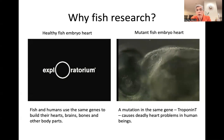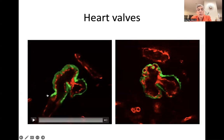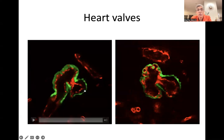So we want to understand more about how genes and the environment interact to cause problems in development. These are two hearts that I imaged in my lab, and my students helped out with that. We have a microscope that can detect fluorescent images. These are genetically modified fish with hearts that make a green fluorescent protein originally from jellyfish, and they were genetically engineered to be green when you shine blue light on them. That's for the muscle of the heart. And here is the atrium, and here's the ventricle.